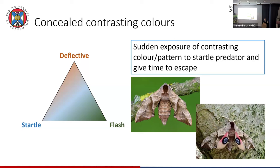Startle colouration is kind of related but slightly different. The idea is that you suddenly expose bright colours, or eye spots, and that frightens the predator. Instead of its attention being misdirected, it's startled — it takes a step back, giving you time to escape before it attacks. A nice example is the eyed hawk moth.